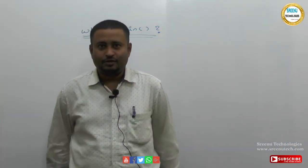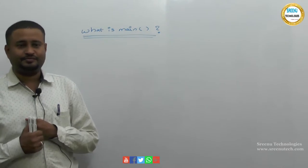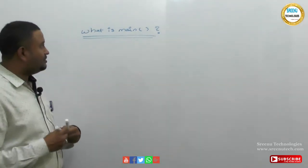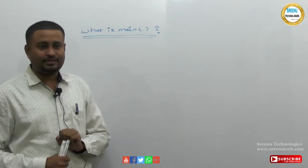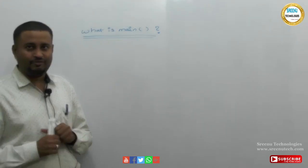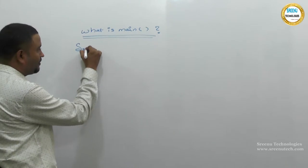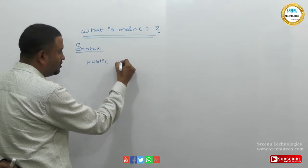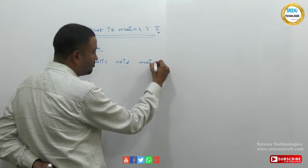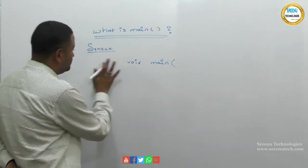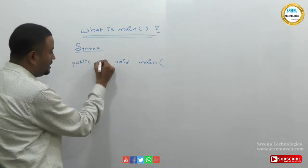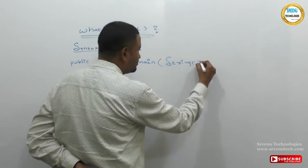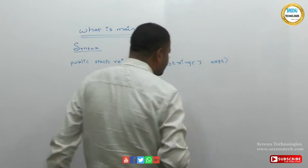Hi, this is Reinvash Lakiam. Today we are going to discuss the main method. What is the main method? Every Java program execution starts from the main method. The main method plays a very important role in Java. The syntax of main method is: public static void main.